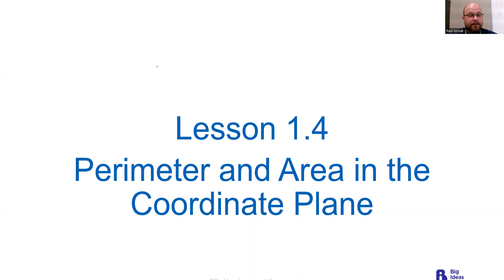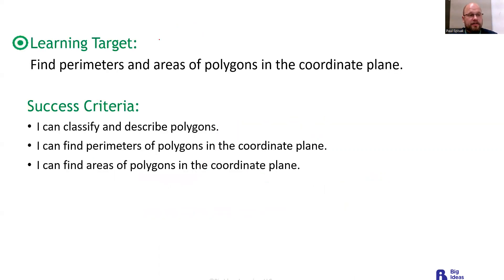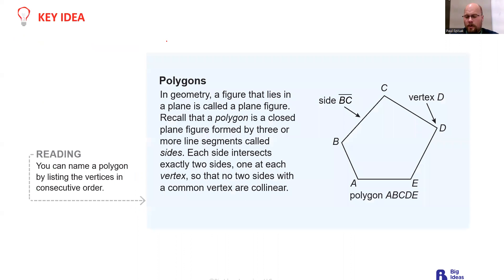We're talking about classifying and describing polygons, perimeters, and area of polygons. A polygon is a closed plane figure formed by three or more line segments called sides. Each side intersects exactly two sides, one at each vertex, so that no two sides with a common vertex are collinear.